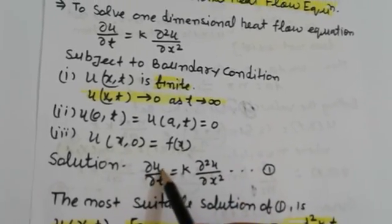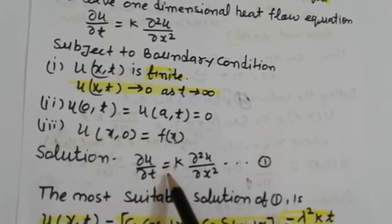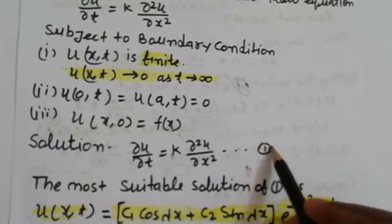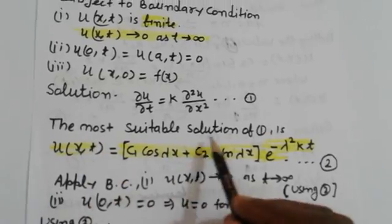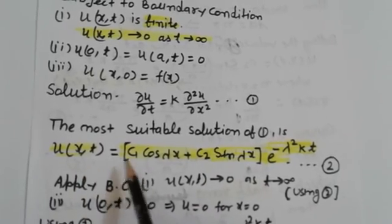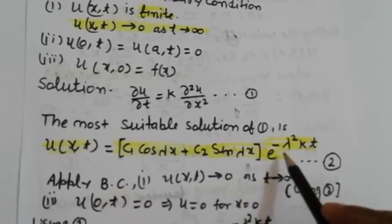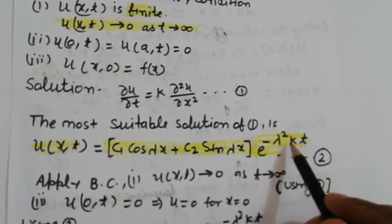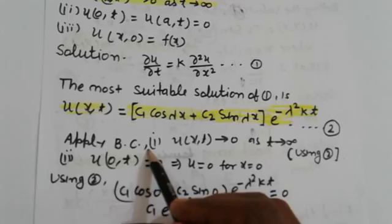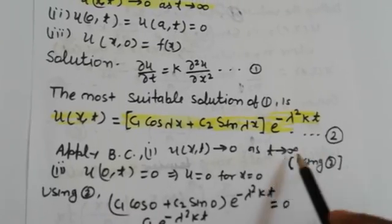The one-dimensional heat flow equation is ∂u/∂t = k ∂²u/∂x², labeled equation (1). The most suitable solution of equation (1) is u(x,t) = (c₁ cos λx + c₂ sin λx) · e^(−λ²kt), which we call equation (2).